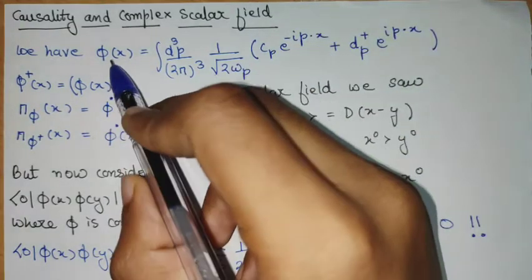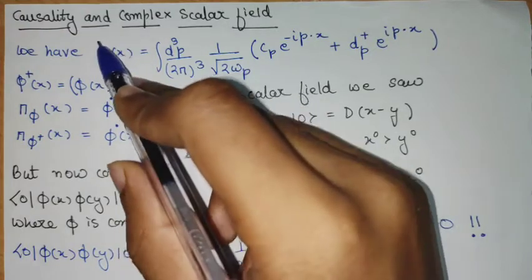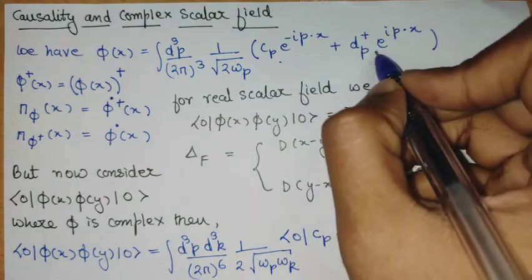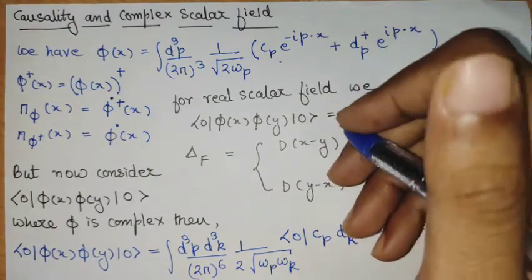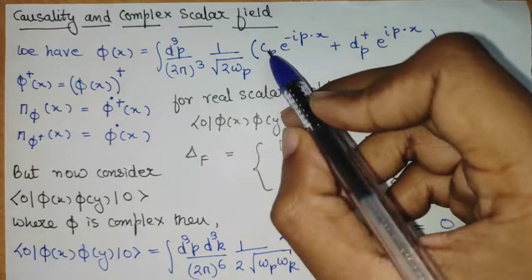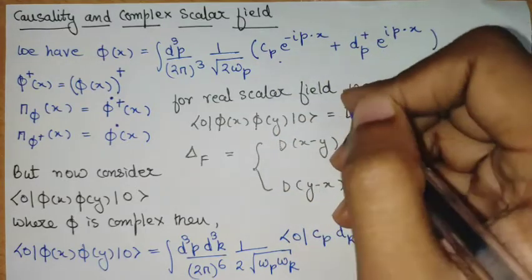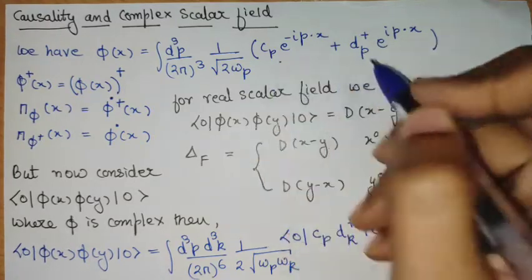We have seen that the operator of the field, the field operator, is written in this form. This is different from the classical scalar field in the sense that we have two sets of creation and annihilation operators, that is cp and dp.